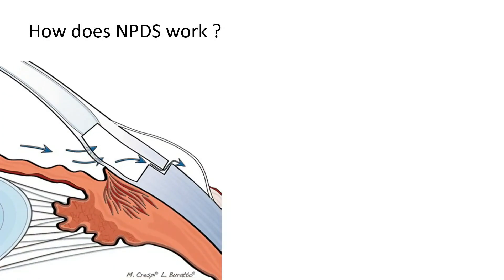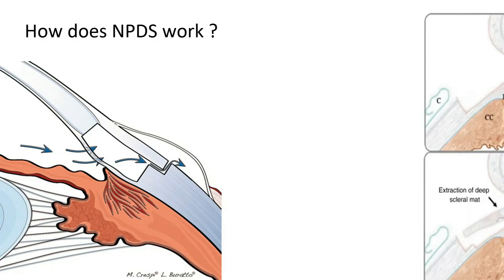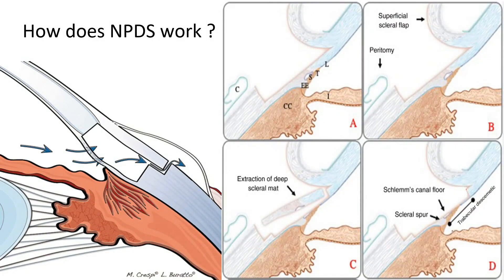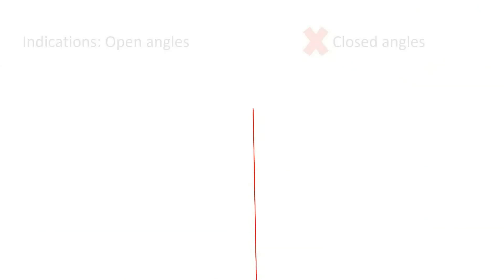In NPDS, we create two flaps — superficial and deep — remove the deep flap, and expose the trabeculo-Descemet window, through which controlled aqueous filtration happens to the scleral lake, thereby reducing the IOP.